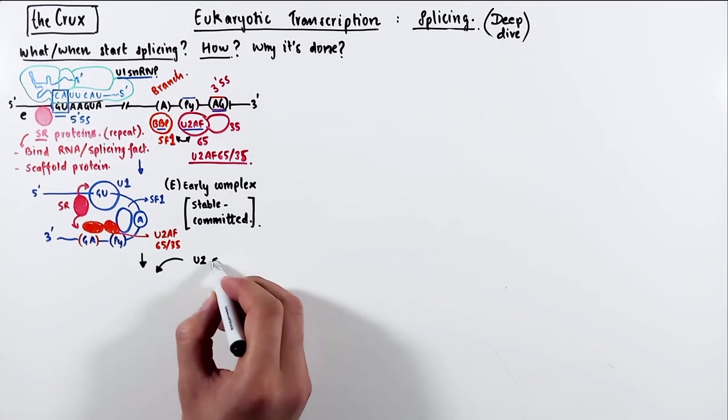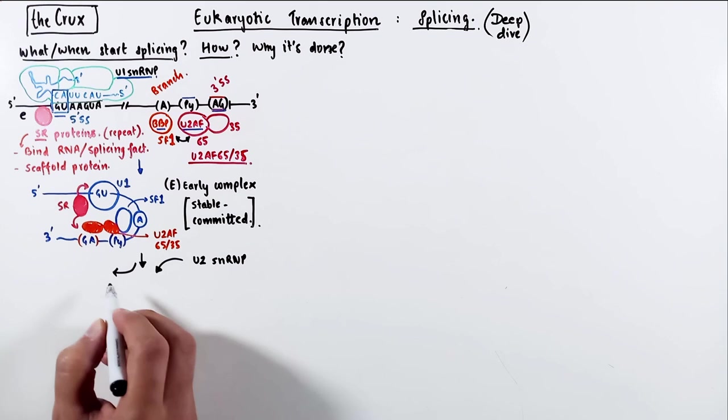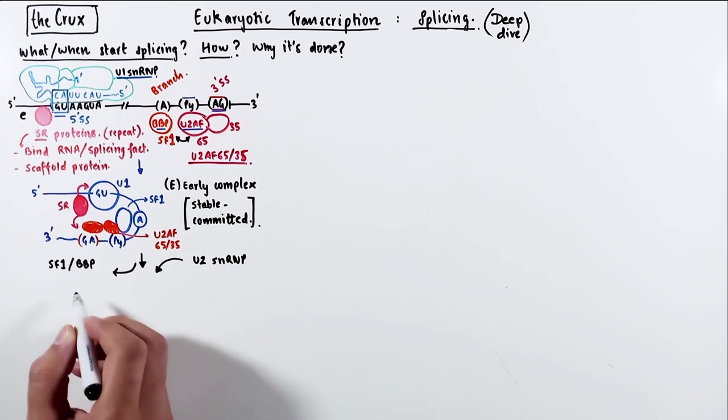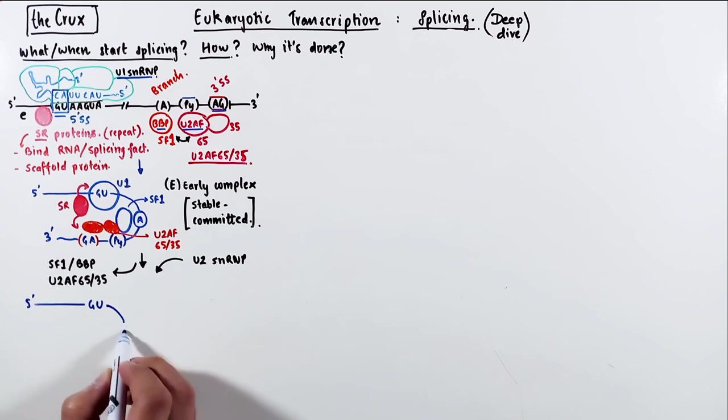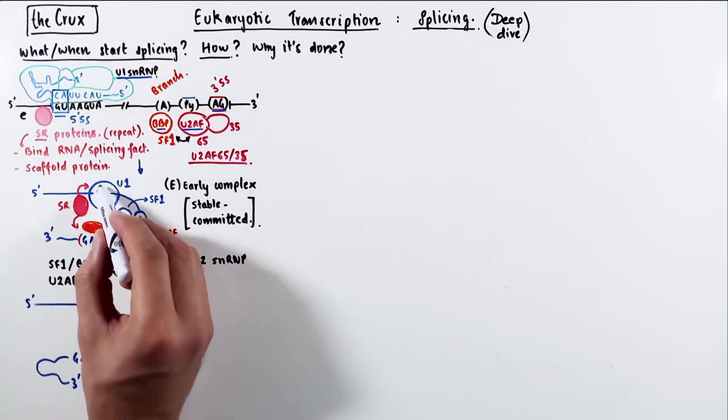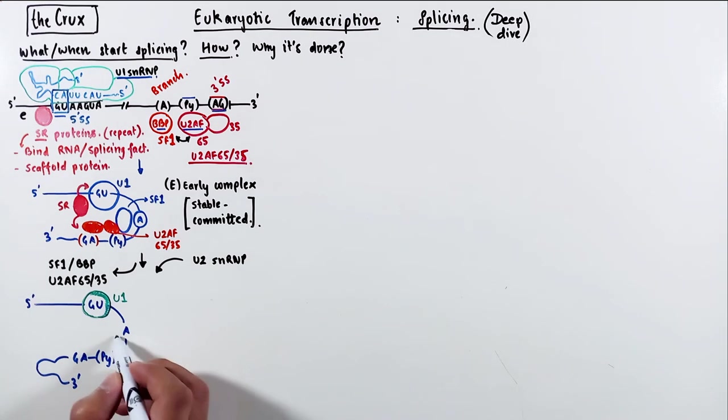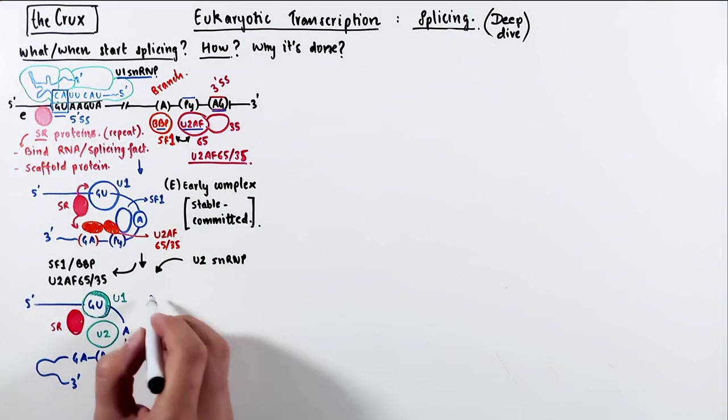U2 snRNP is added to it. The U2 usually replaces SF1 and U2AF proteins, which means now at the E complex, we still have U1 bound at the 5' splice site, but now the U2 pairs at the branch point and a bit with the pyrimidin stretch.